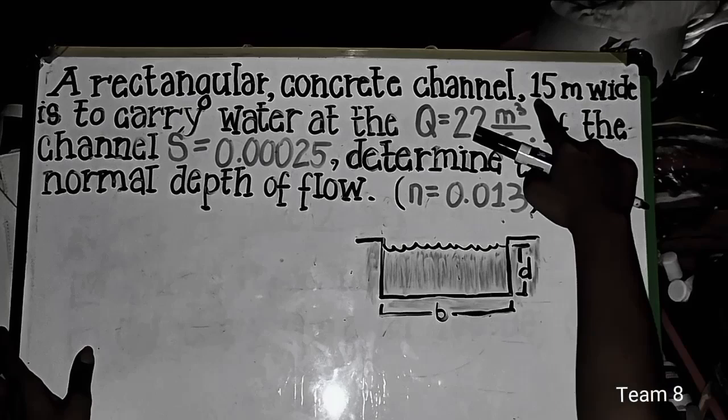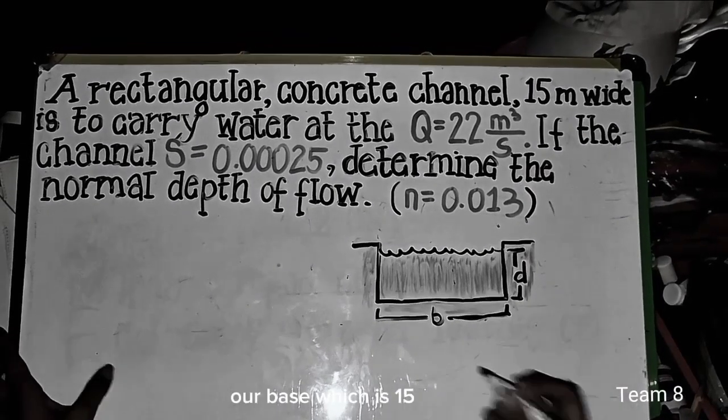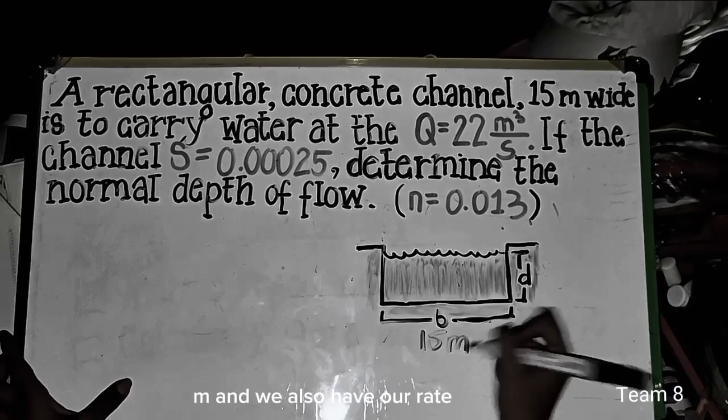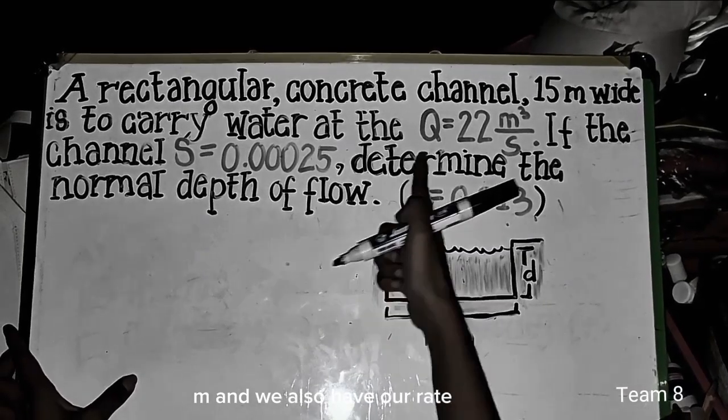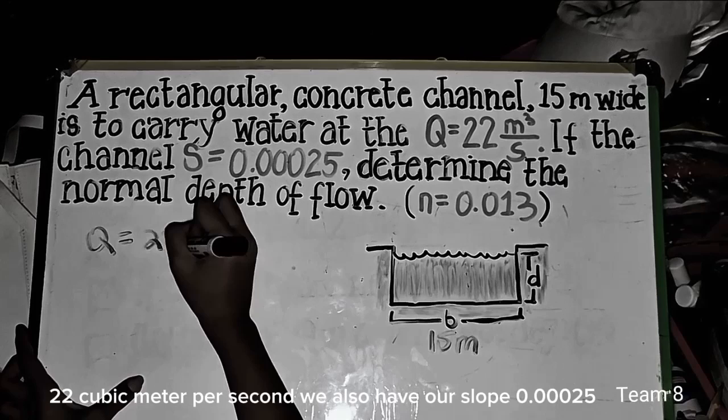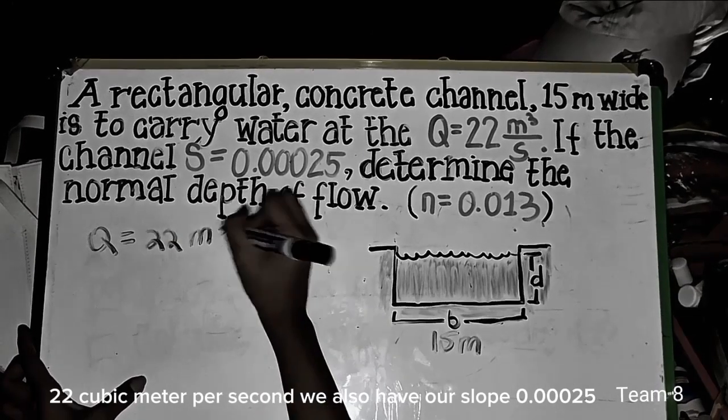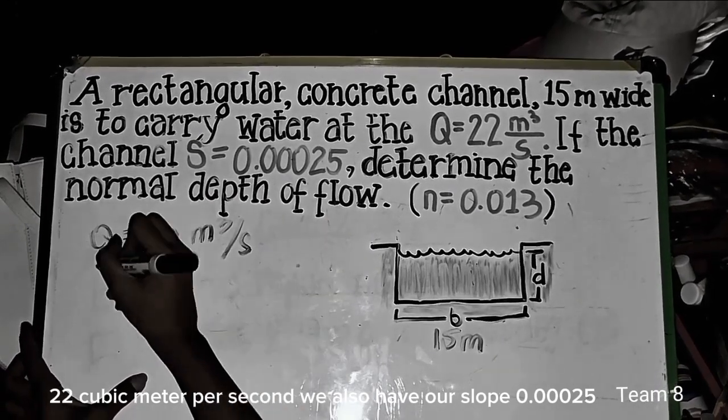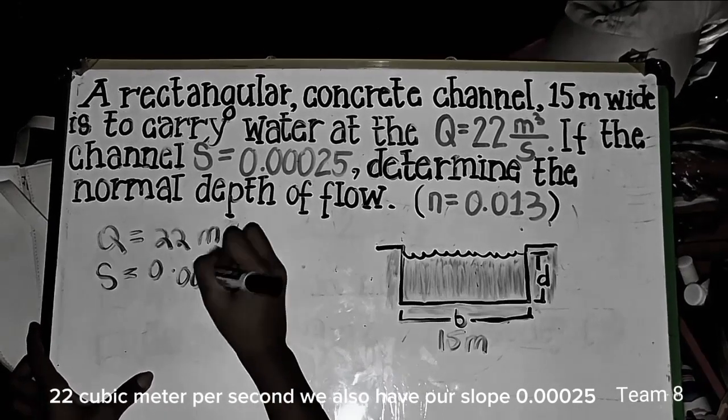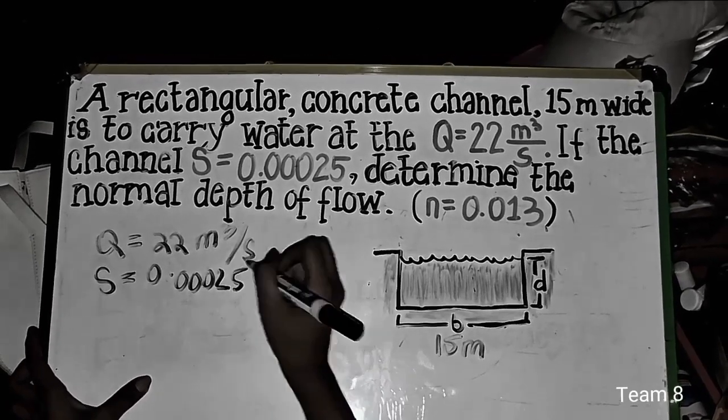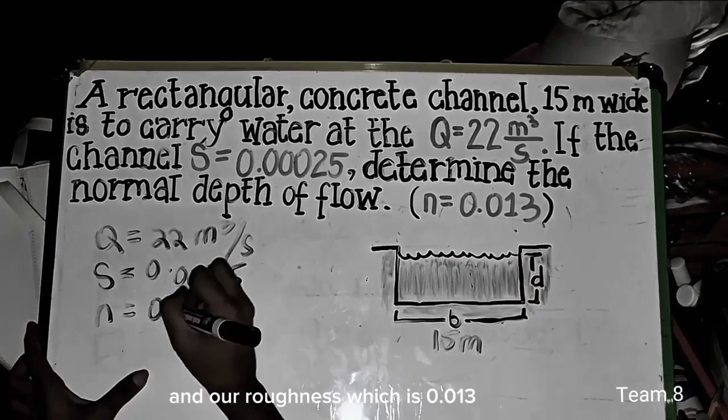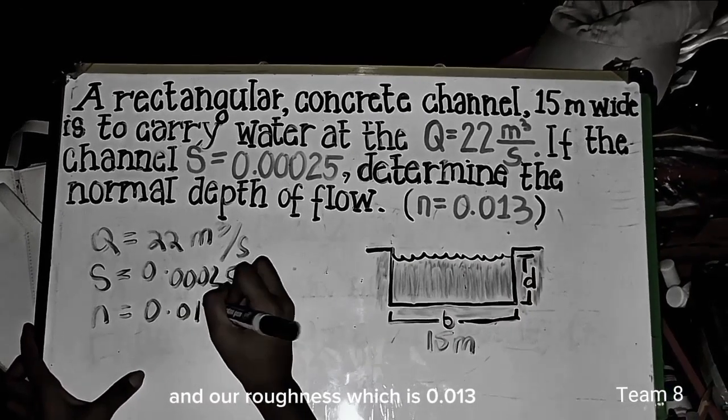So we have here our base, which is 15 meter. And we also have our rate, which is Q equals 22 cubic meter per second. And we also have our slope, which is 0.00025. And our roughness, which is 0.013.